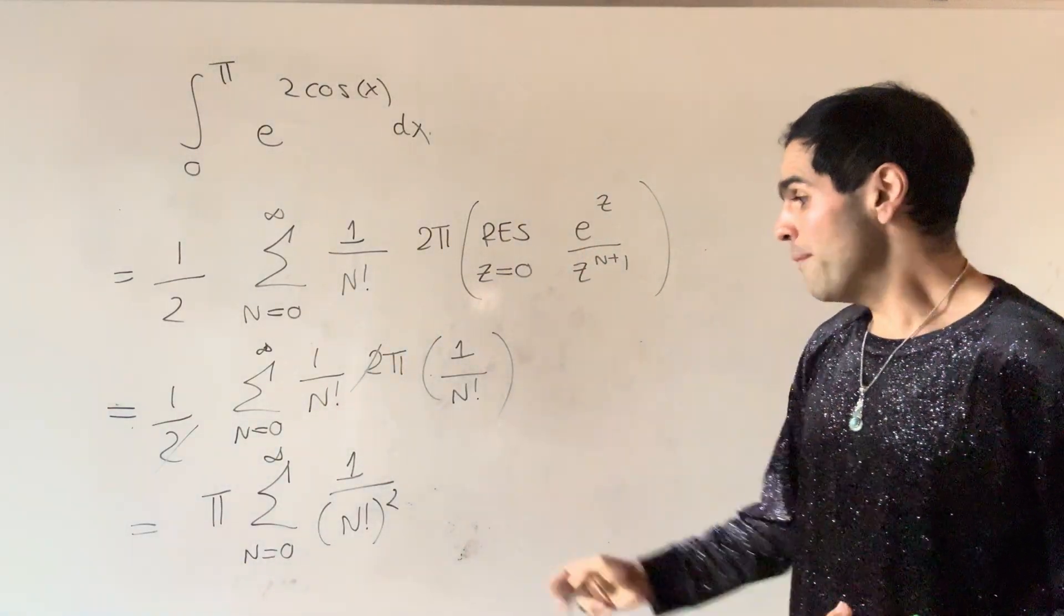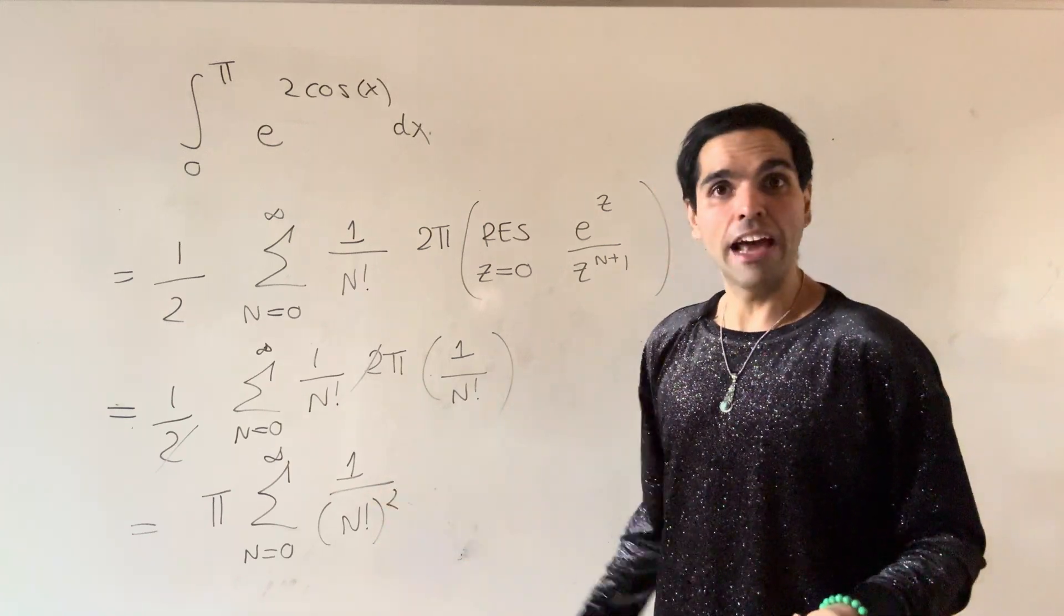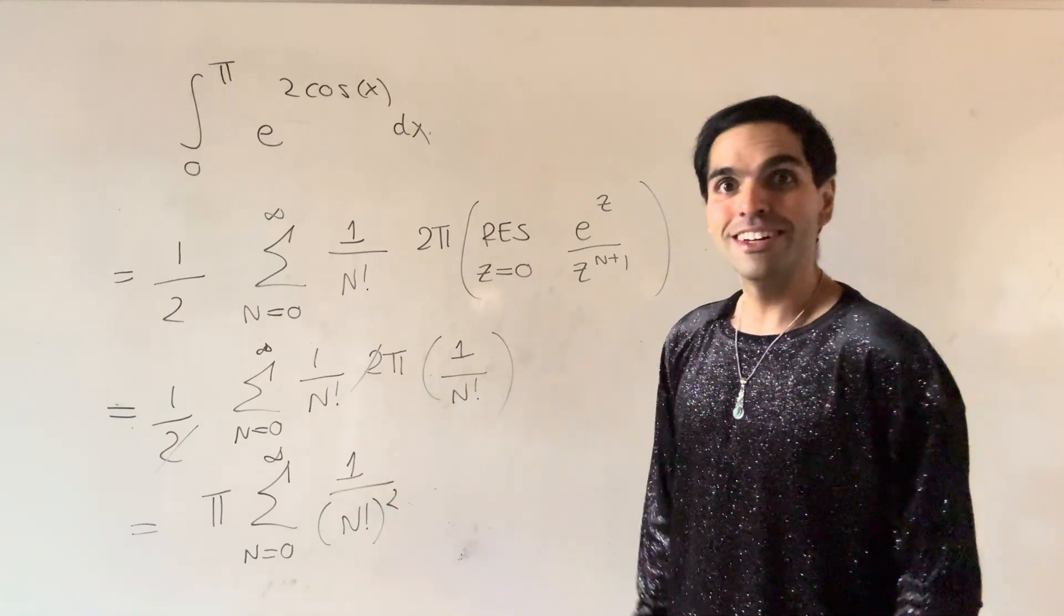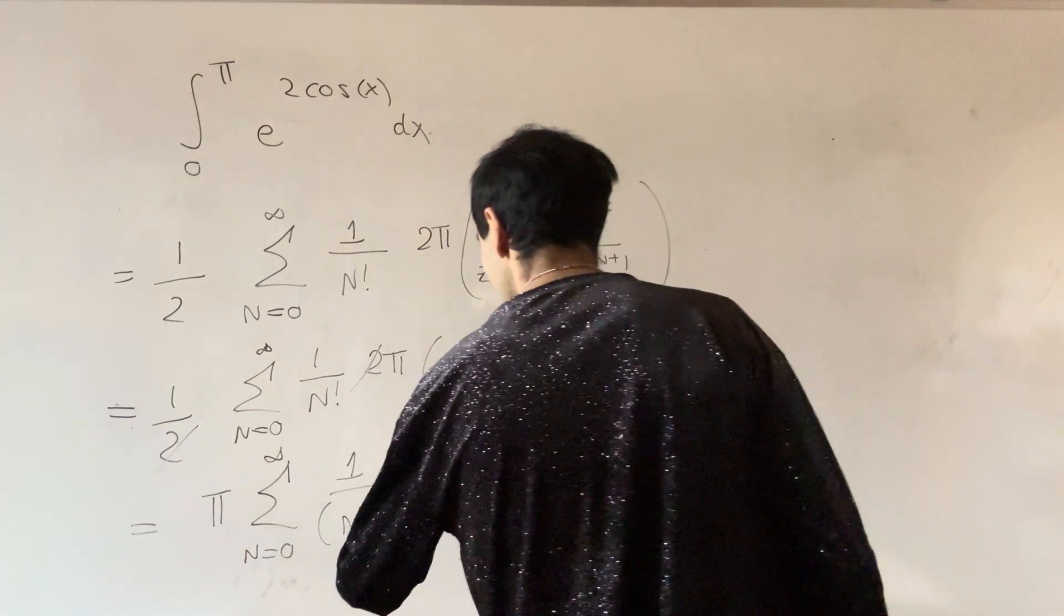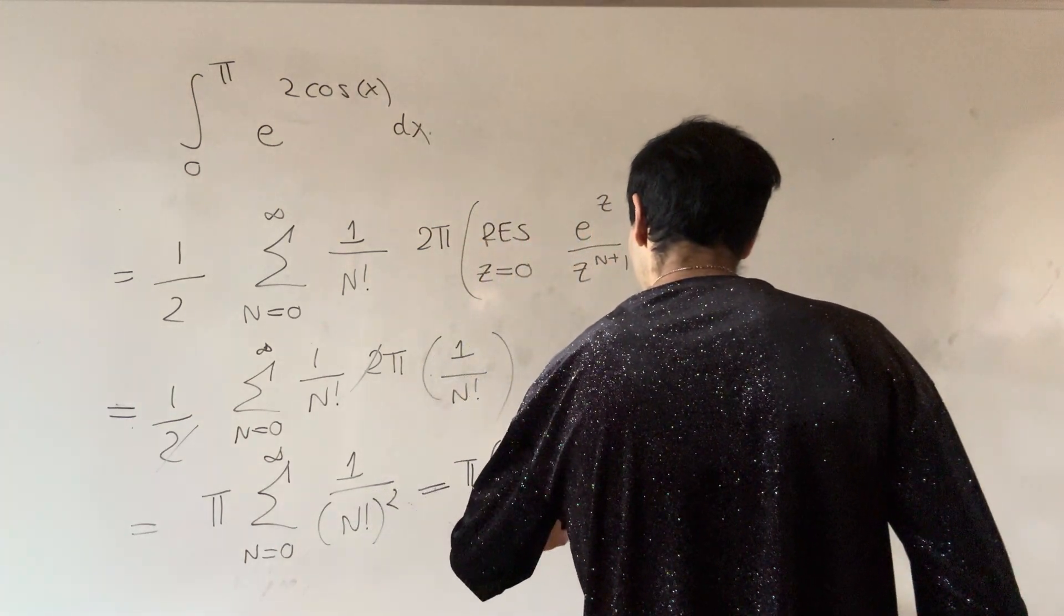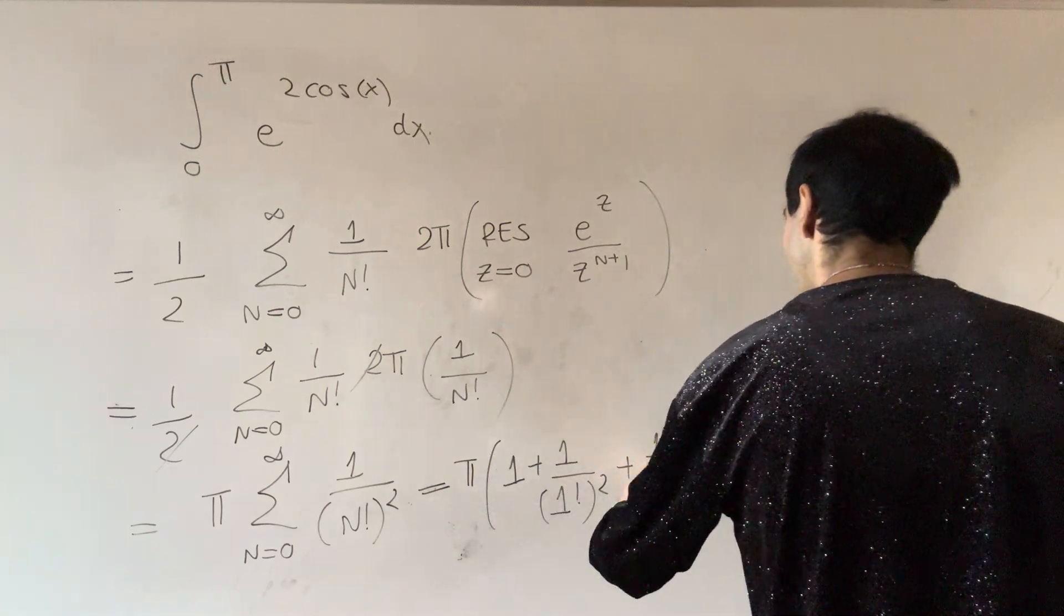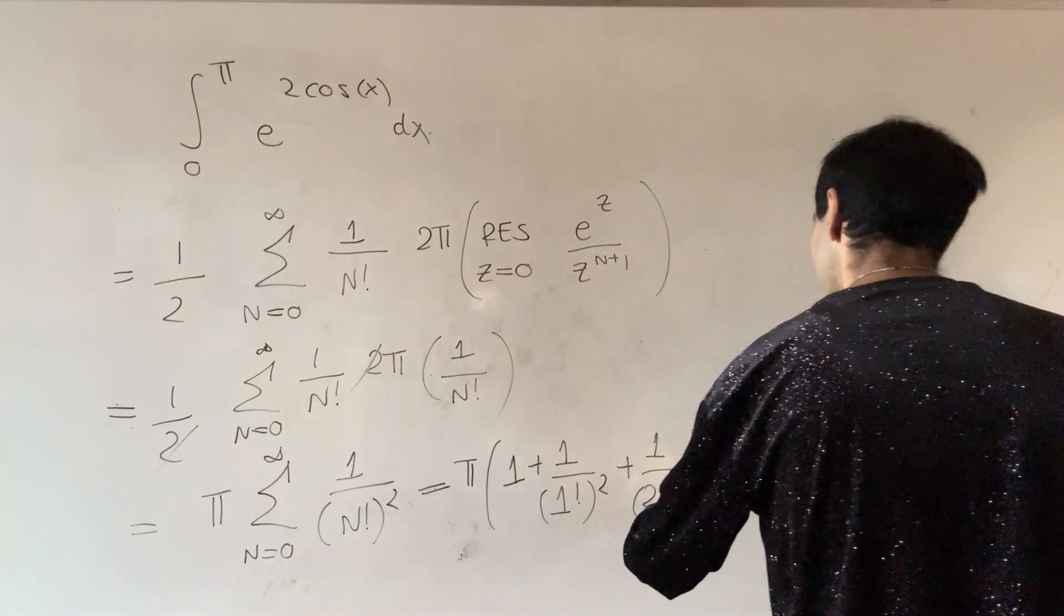What? I mean, where do you ever see the sum of n factorial squared? Which is quite interesting, because, in other words, this is pi, and then one, plus one over one factorial squared, plus one over two factorial squared, et cetera.